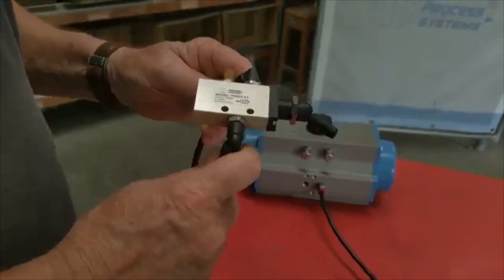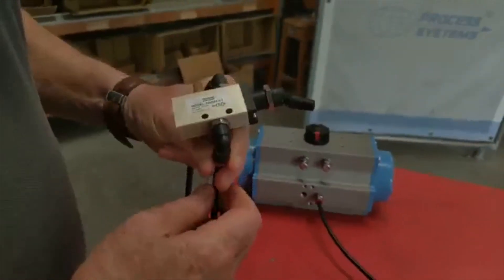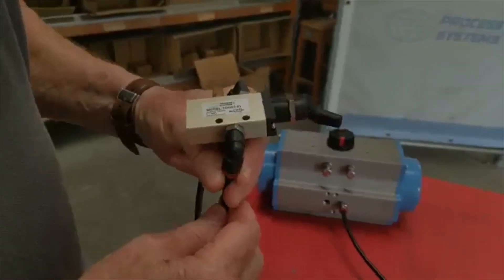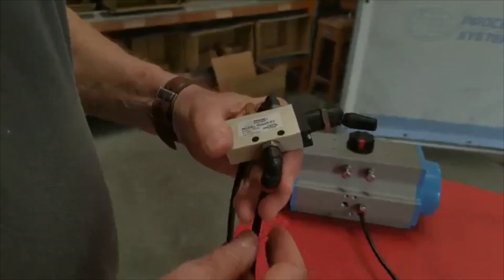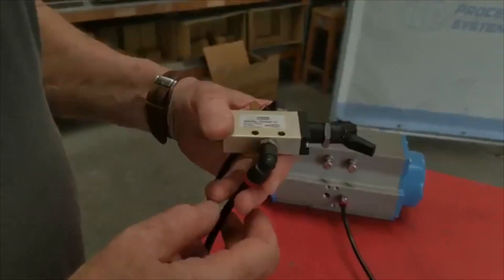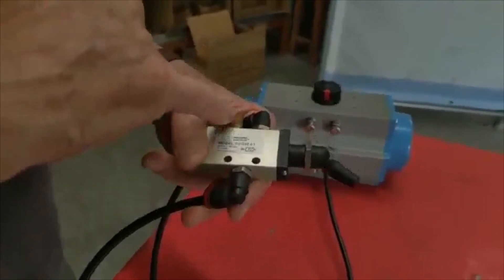This is a 3.2 toggle valve designed for panel mounting or machine operation, usually used in operating water trucks and actuators. It's 1/8th BSP and has an inlet port, outlet port, and exhaust port.